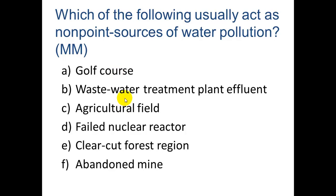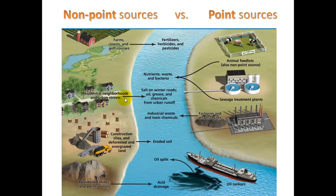For B, point. C, non-point. D, point. E, non-point. F, point or maybe non-point. This diagram from our textbook illustrates it — it basically comes down to how big of a thing it is. If it's a small feedlot, you might think of it as a point source. If it's a really big one, then non-point.